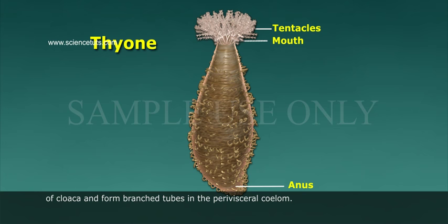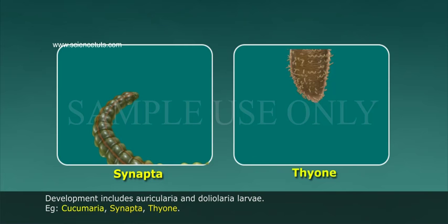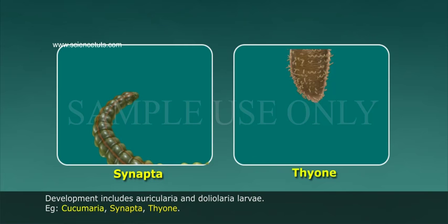Development includes Auricularia and Doliolaria larvae. Examples: Cucumaria, Synapta, Thyone.